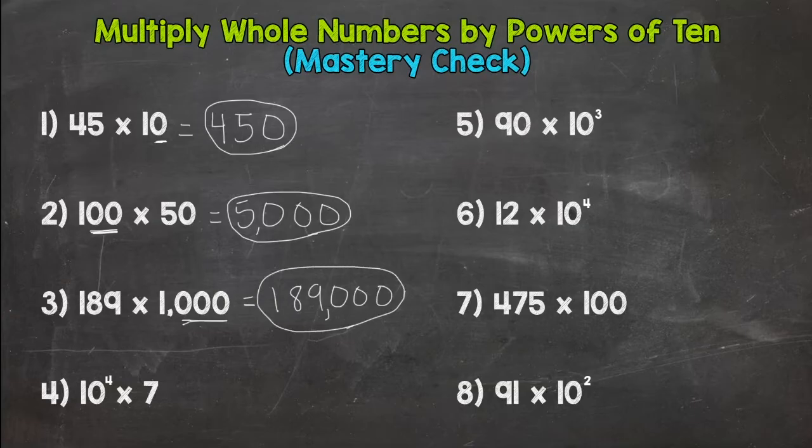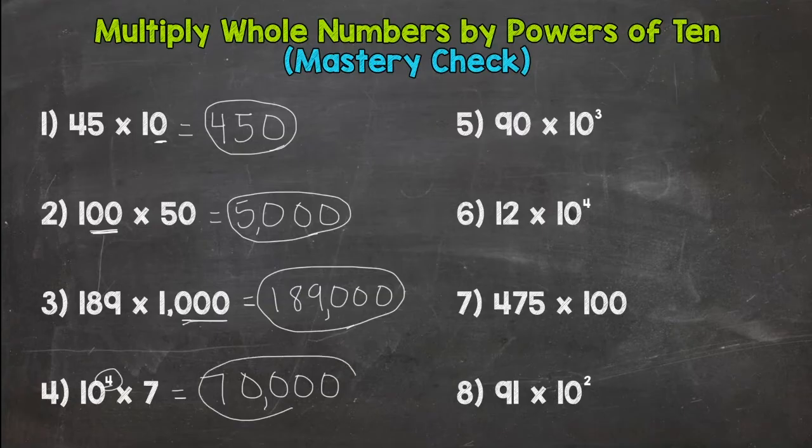Number four, we have 10 to the fourth power times seven. So we have seven and we take a look at our exponent four. So that means we need four zeros to push that seven to the 10,000 spot, the correct place, and we get 70,000. And think, 10 to the fourth power means 10 times 10 times 10 times 10, which is 10,000. And think 10,000 times seven, 70,000. It makes sense.